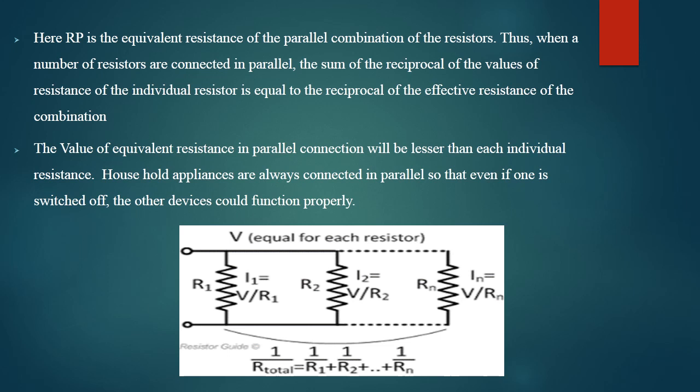Our household appliances are always connected in parallel, so that even if one is switched off, the other devices can function properly. This is one advantage of parallel over series connection. If the circuit is disconnected, only one circuit gets disconnected; since it is connected in parallel, the other electrical appliances keep on functioning. So we need not worry about that, since the connection is in parallel. Thank you.